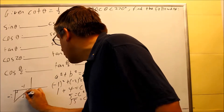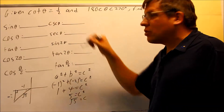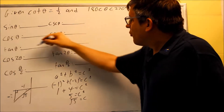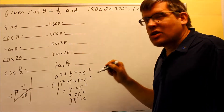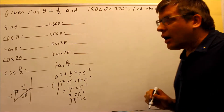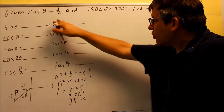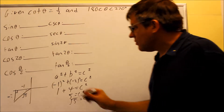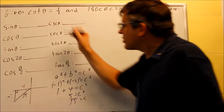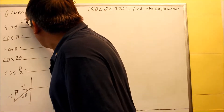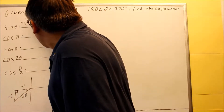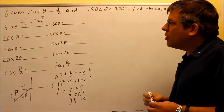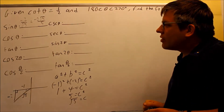Since I have the triangle complete, I'm ready to answer the first five things. On these problems, you always want to do the first five with the single angles because they'll be used to fill in the double angles and the half angles. We'll do sine first: sine equals opposite over hypotenuse. In this case, I have negative 2 over radical 5. Rationalizing gives negative 2 radical 5 over 5, and that's my answer for sine theta.